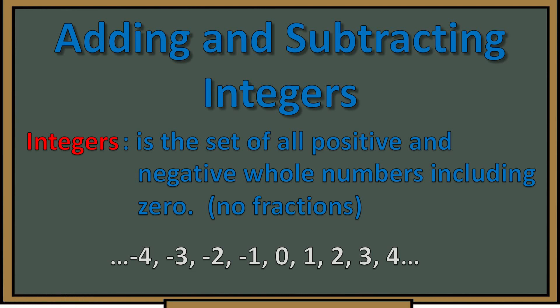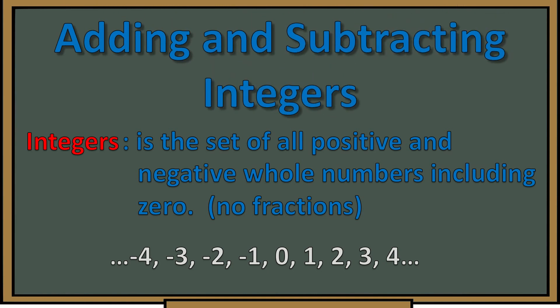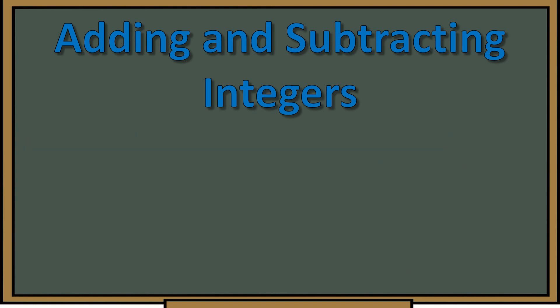Hey guys, this is Mr. Molina, and in this video I'm going to show you a little strategy on how to add and subtract integers. Integers is just a set of all the positive and all the negative whole numbers, including the number zero. Remember that zero is a neutral number — it's neither positive nor negative.